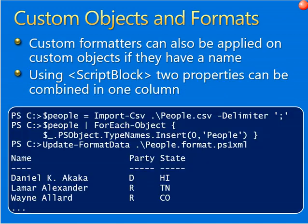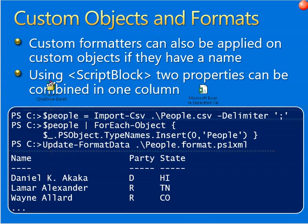Next is the last part: custom objects and format. Custom formatters can also be applied on custom objects if they have a name. Using a script block, two properties can be combined into one column. I have two examples here — you can see the Excel and the driver examples. Based on these two columns I can combine them into one output using Update-FormatData, reading from a file called format.ps1xml — feeding two properties into one.